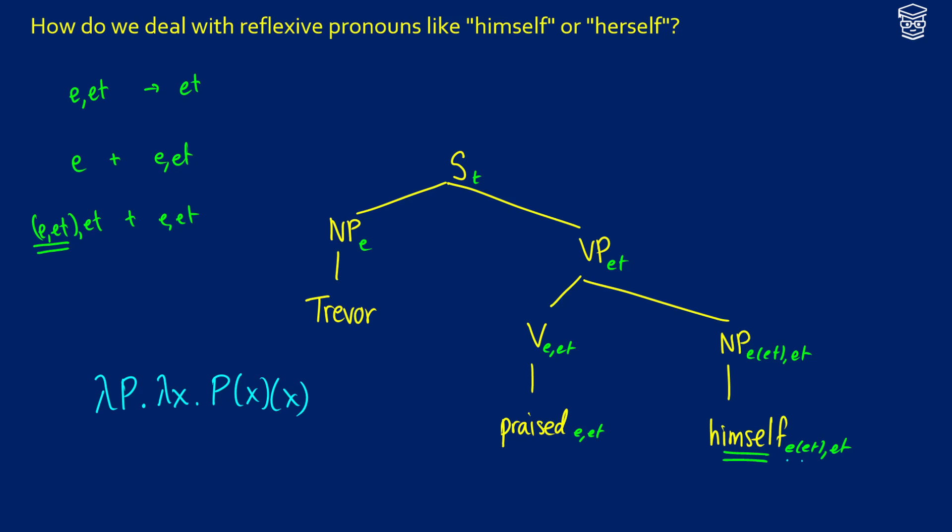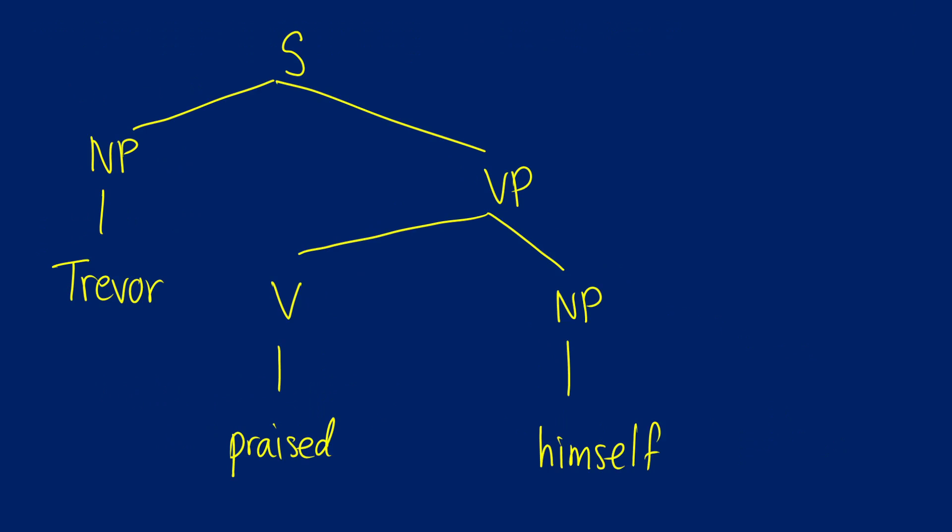So what exactly does this mean here? Well, what this means is that when we apply a verb like praised in this case, what's going to happen is we're going to get that praised and X and X is what's established, and we're going to get our lambda X at the end once we apply it. Then we can then apply our subject Trevor to that sentence. So let's see how this looks in practice.